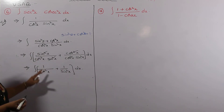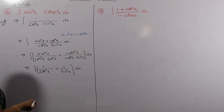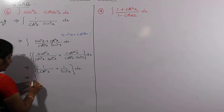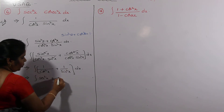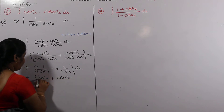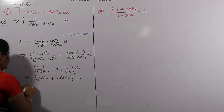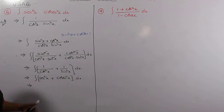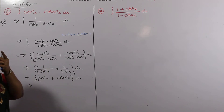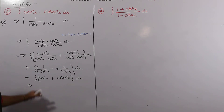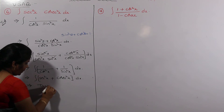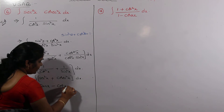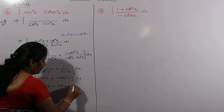We don't have direct formulas for 1 over cos squared x and 1 over sin squared x directly, but 1 over cos squared x is secant squared x and 1 over sin squared x is cosecant squared x. We do have the integral formulas for these: integral of secant squared x is tan x, and integral of cosecant squared x is minus cot x.